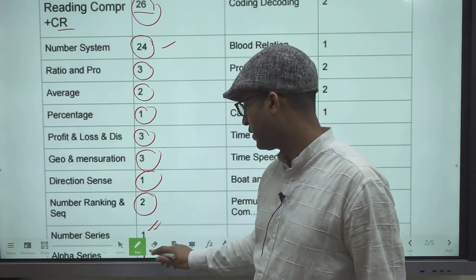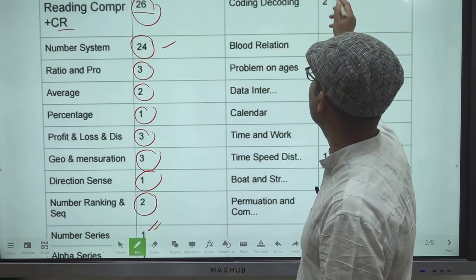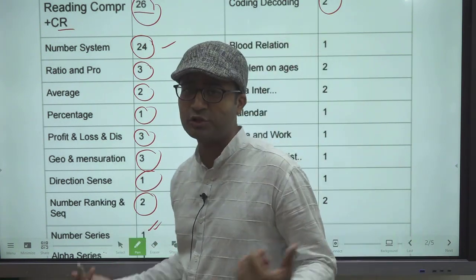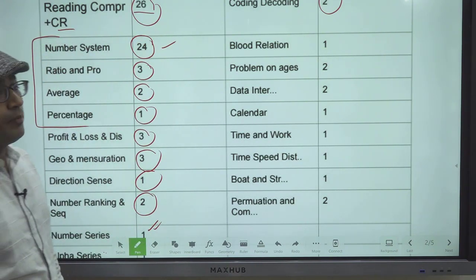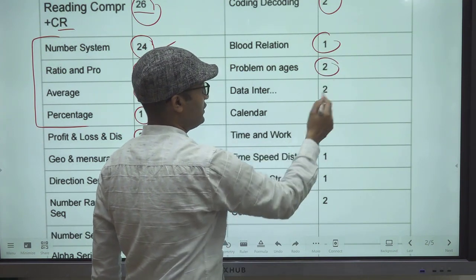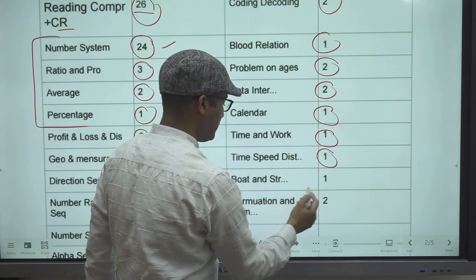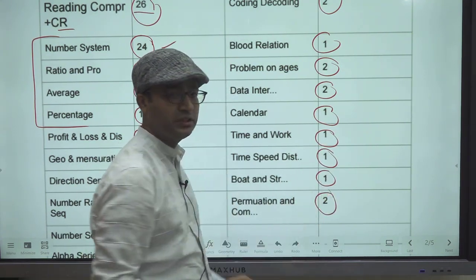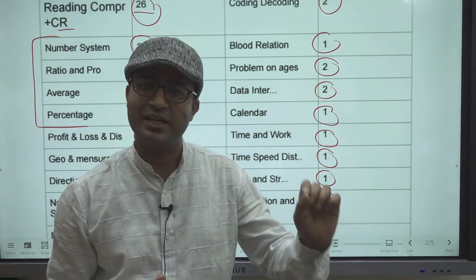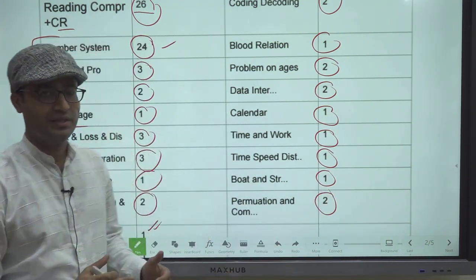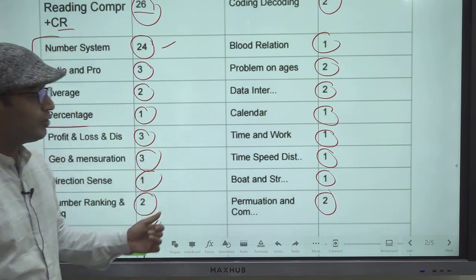Here it is highlighted by this bar - this is alphabet-based series, 1 question. Coding Decoding 2 questions. I keep telling you, from these topics 3-4 questions, Number System is very important. Blood Relation 1 question, Problem on Ages 2 questions, Data Interpretation 2 questions, Calendar 1 question, Time and Work 1, Time Speed Distance 1, Boat and Stream 1, Permutation and Combination 2. They don't ask CAT level questions in Permutation and Combination - they are simple, manageable questions. Easy concepts of Permutation and Combination are required for CSAT actually.